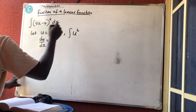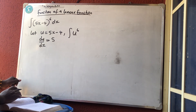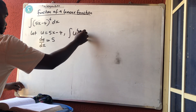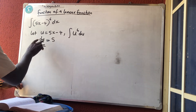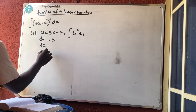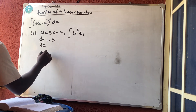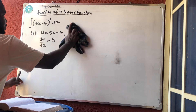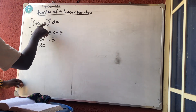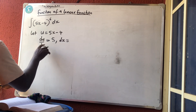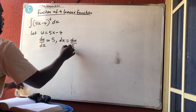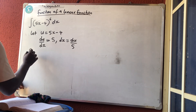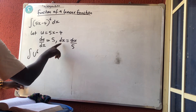We are now looking for the integral of u raised to power 6 — but it's going to be du. So the integral of u⁶ du. Now, dx: since du/dx = 5, we rearrange so that dx = du/5. Substitute it in — you are now looking for the integral of u⁶ multiplied by du/5.